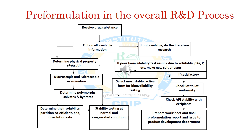Finally, we go for stability testing at normal as well as exaggerated conditions. We select the most suitable and most stable active form for bioavailability studies. If satisfied, we check lot-to-lot uniformity, check API stability with the excipients, then prepare a worksheet and final pre-formulation report, and issue it to the product development department. If the parameters are not suitable — for example, poor bioavailability test results due to solubility, pKa, or partition coefficient — then we have to make another compound, salt, or ester of the drug and again perform all these studies.